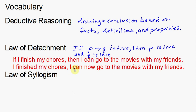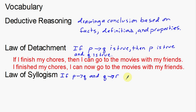Law of syllogism — kind of a fun word to say — uses some of the same notation but is a little bit lengthier. If P, then Q — so again I have a conditional statement where I have if P, then Q — and if Q, then R. So bringing in another conditional statement. Notice the pieces here: the first conditional statement's conclusion is the first part of my next statement, so that actually is the hypothesis. So if P, then Q, and if Q, then R — that's what the beginning of the law of syllogism is.